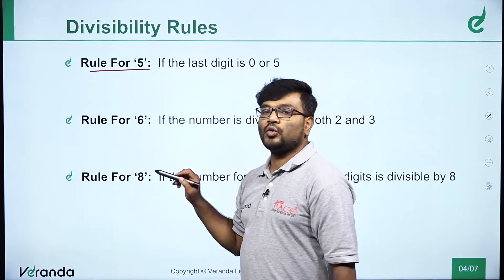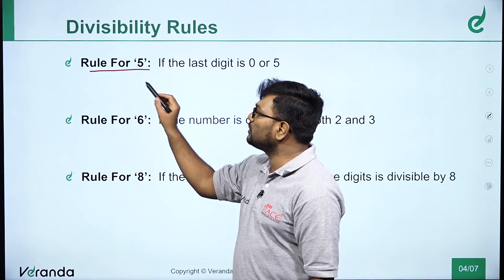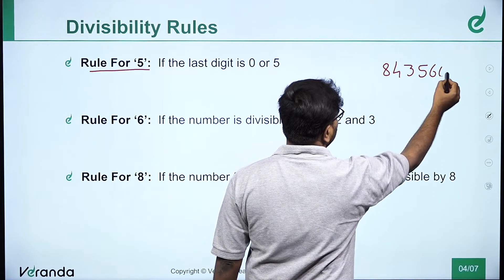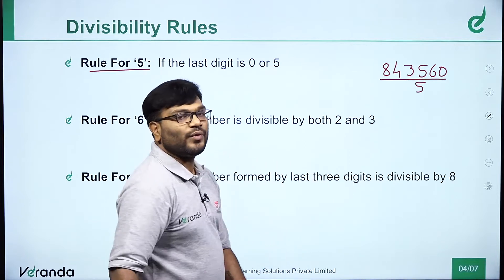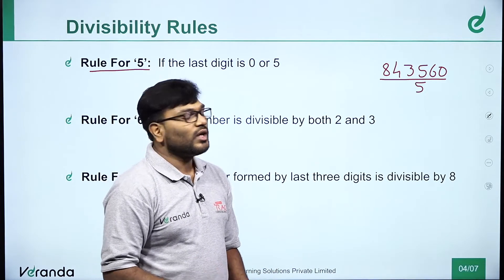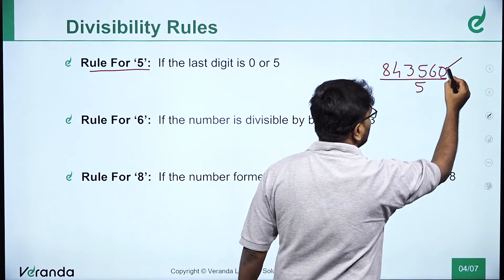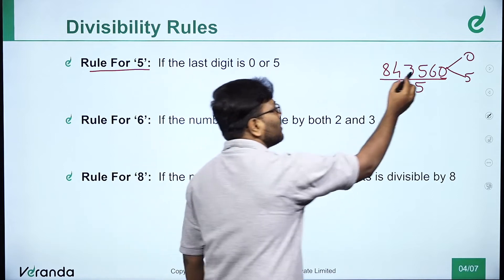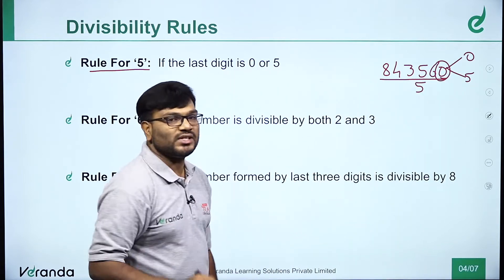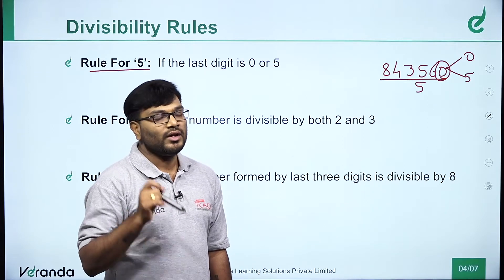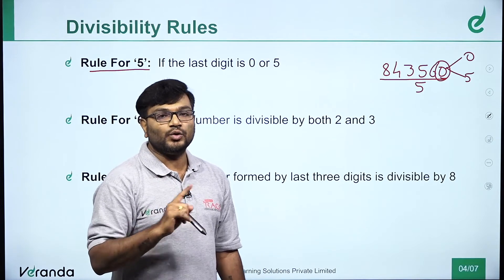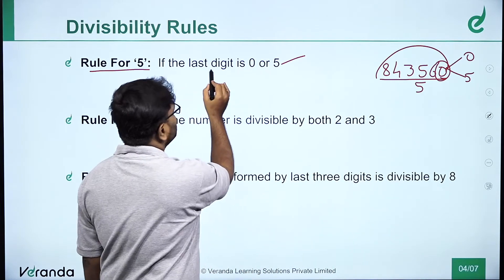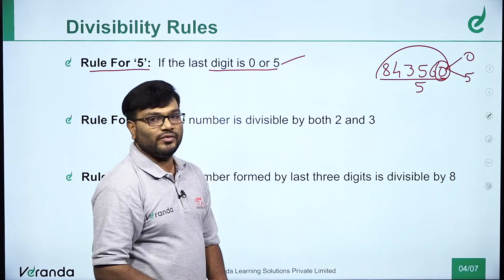Next rule is rules for 5. For example, take the number 8, 4, 3, 5, 6, 0 divided by 5. Check the number — just look at the unit place. If the unit place is either 0 or 5, then the complete number is divisible by 5. If the last digit is either 0 or 5, the complete number is divisible by 5.